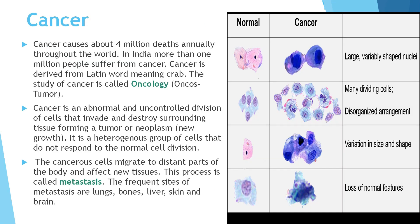Cancer causes nearly 4 million deaths every year worldwide. In India, more than 1 million people suffer from cancer. Cancer is derived from a Latin word meaning 'crab,' and the study of cancer is called oncology. Cancer is an abnormal and uncontrolled division of cells that invades and destroys surrounding tissue, forming a tumor, otherwise called a neoplasm, meaning 'new growth.' Cancer cells detach from the place of origin, migrate to distant parts of the body and affect new tissues — a process called metastasis, occurring in the lungs, bones, liver, skin and brain.